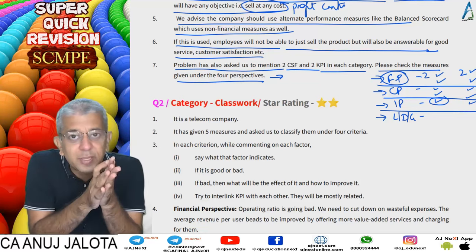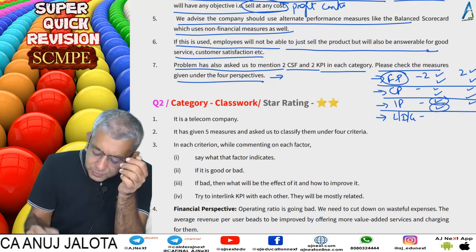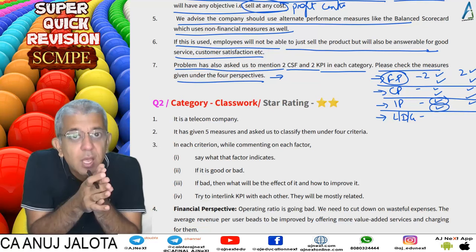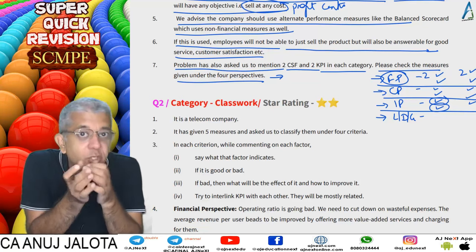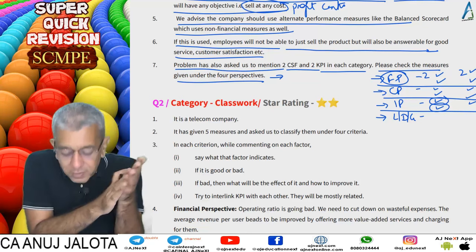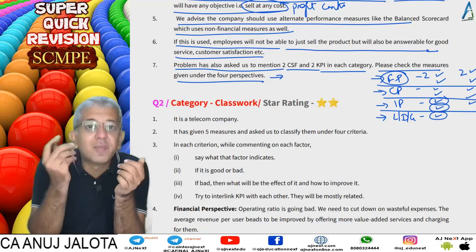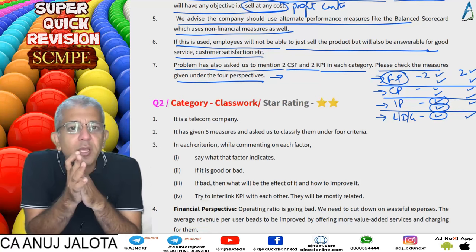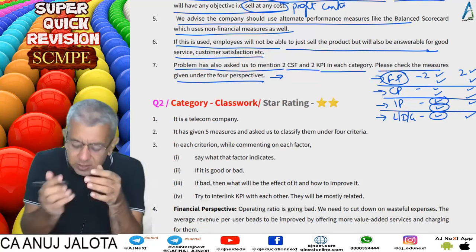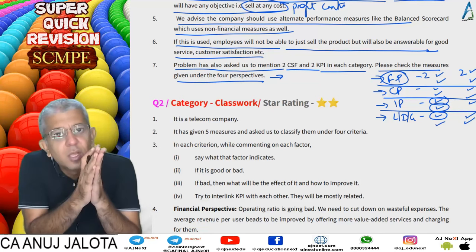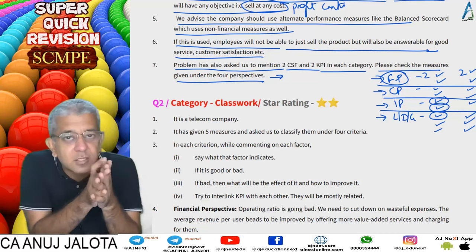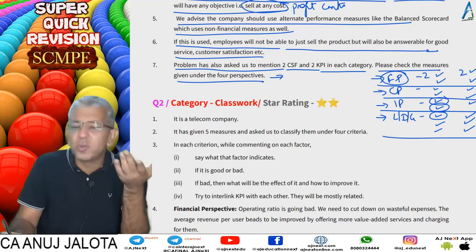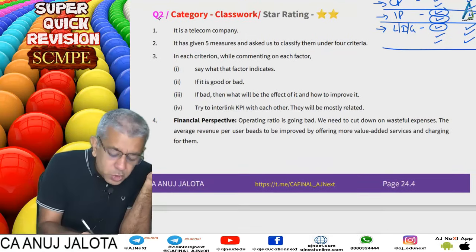Another internal KPI could be zero unscheduled machine stops, measuring machine quality loss through OEE — Overall Equipment Effectiveness — from TPM. For learning, development, and growth: CSFs could be launching more models each year, with KPI of number of models launched; providing training to workers, with KPI of training hours; and conducting R&D, with KPI of R&D hours. Any two KPIs and two CSFs from these examples will be fine.